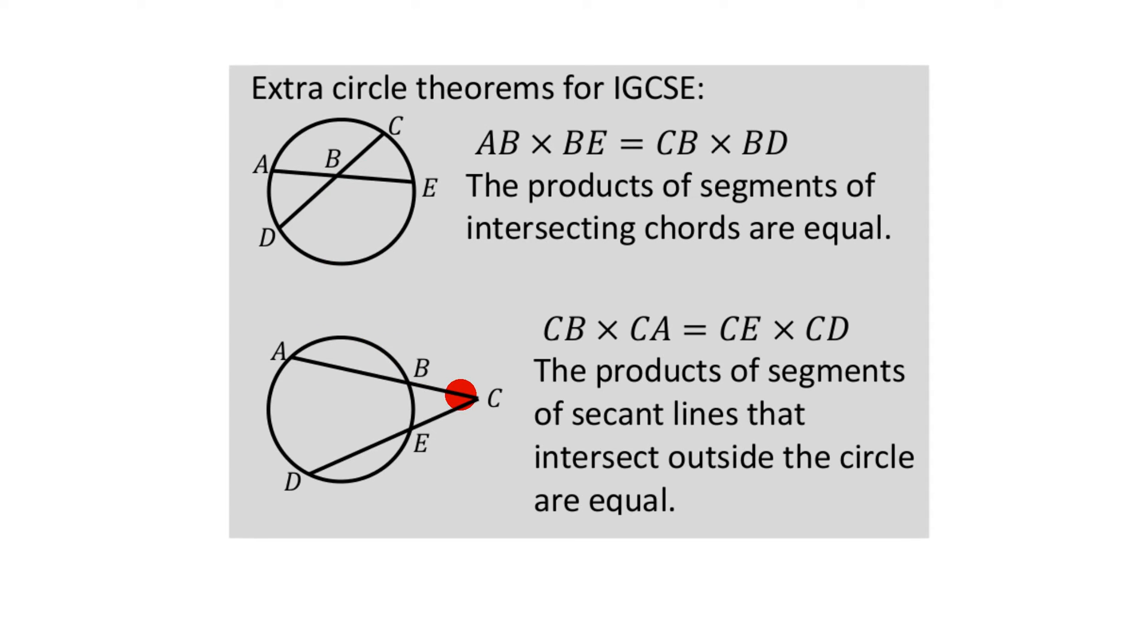And this rule is pretty much the same rule, this time your two straight lines meet outside the circle, rather than inside the circle. We can't call them chords this time, because they go outside the circle. We call them secant lines, or secant lines, or whatever you want to call them.